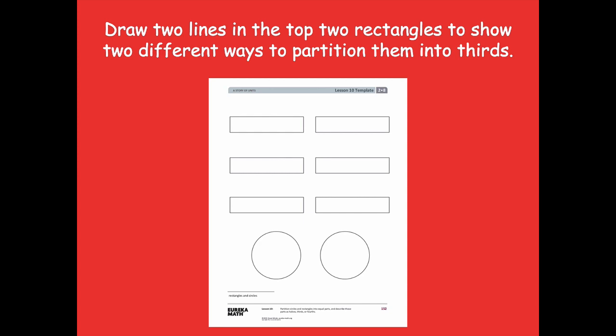All right friends, pause if you need more time. I'm going to zoom in and have them a little bit bigger for us. Here are my two rectangles. I drew two vertical lines to split the first rectangle into thirds. Now I'm going to draw two horizontal lines to split the other one up. So these are two different ways that you could split up your rectangles into thirds.